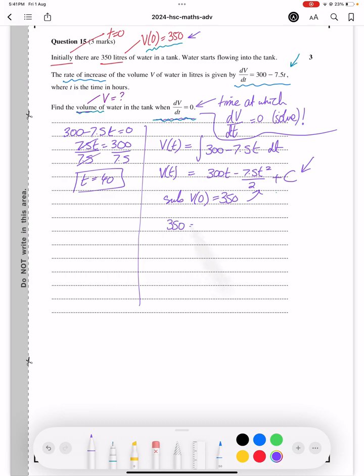That gives us 350 equals 300 times 0 minus 7.5 times 0 squared all over 2 plus C. So 0 minus 0 gives us C equals 350. Therefore the V(t) formula is 300t minus 7.5t squared over 2 plus 350.